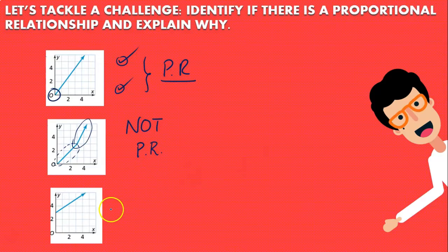What about the third one? The third one again is a straight line but it doesn't touch point zero comma zero. So again this is not a graph showing a proportional relationship.